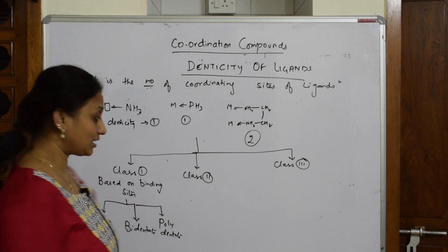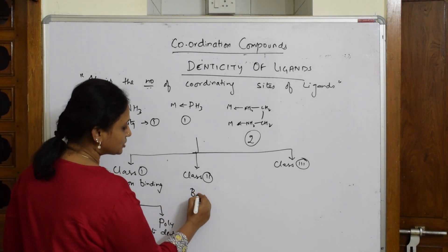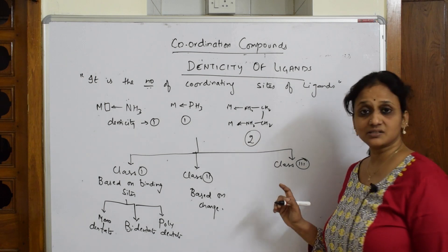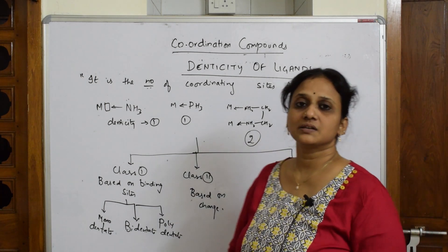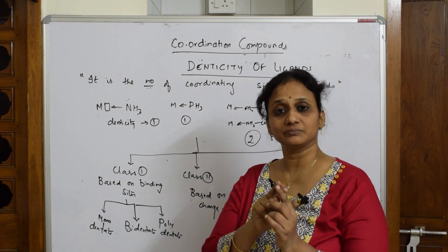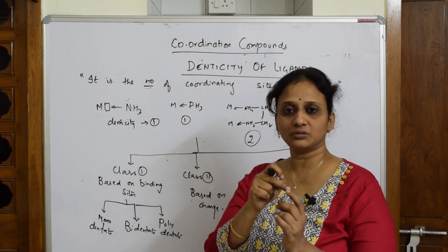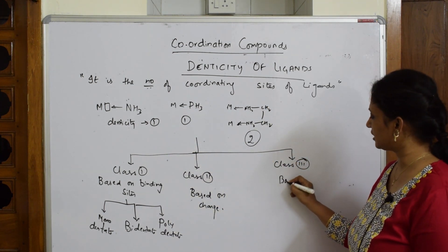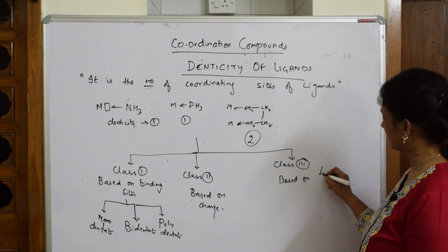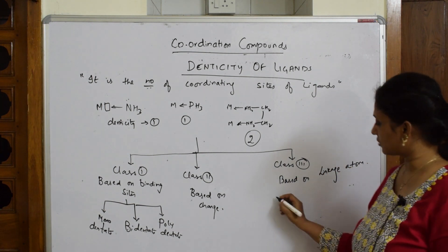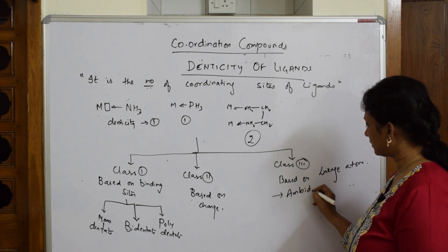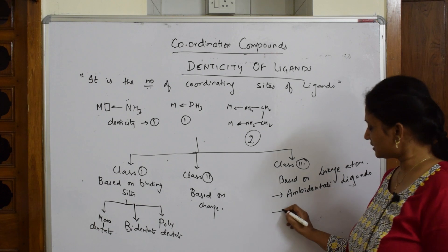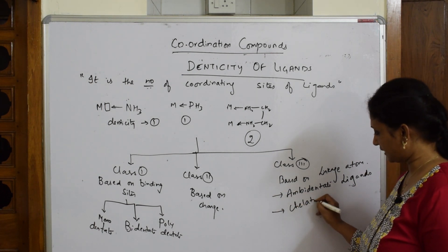In Class 2, ligands are classified based on charge. In Class 3, ligands are classified based on the linkage atom — which atom is attacking. This includes ambidentate ligands, which can attack from both sides, and chelating ligands, which form bridges with the metal atom.